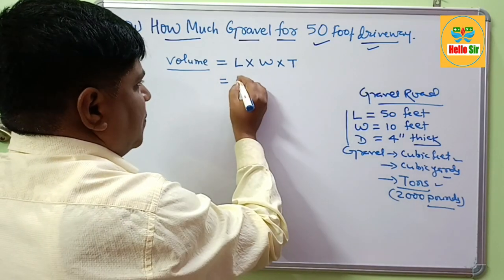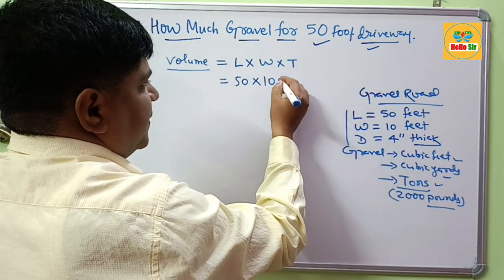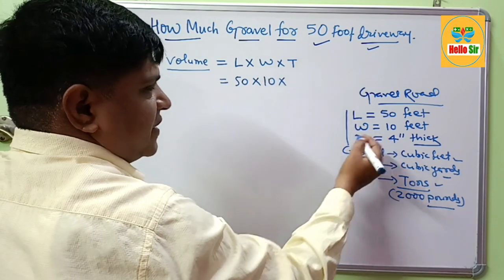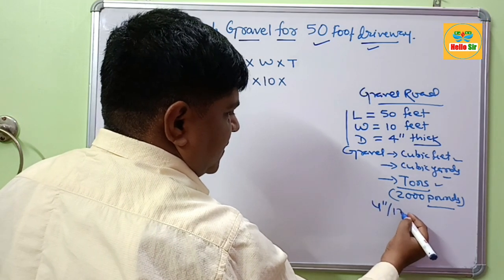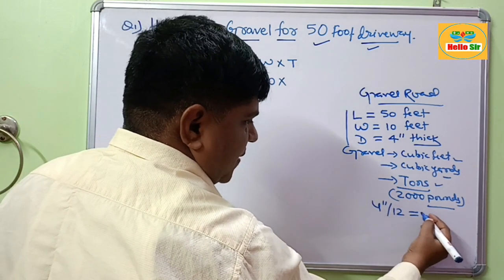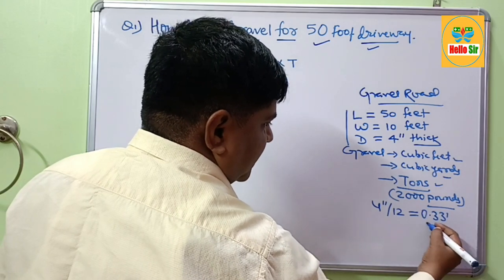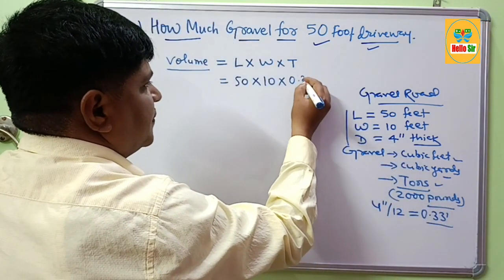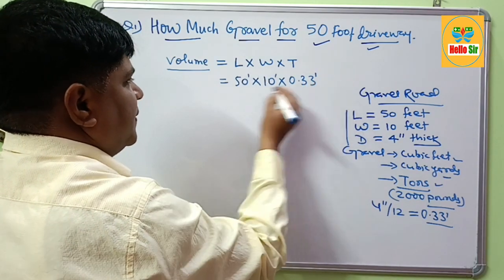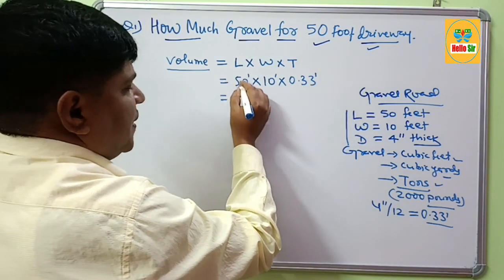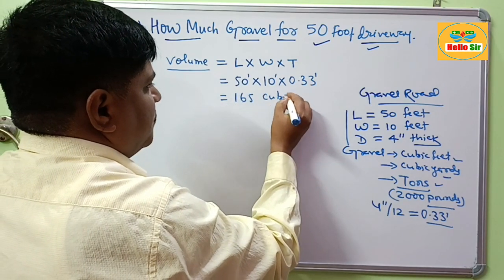Length is about 50 feet, width is about 10 feet, and thickness is 4 inches. To use this in the formula, convert 4 inches to feet by dividing by 12, which gives about 0.33 feet. Now all three dimensions are in feet.